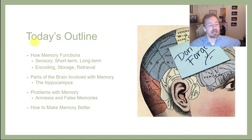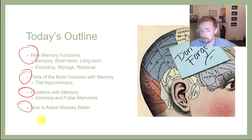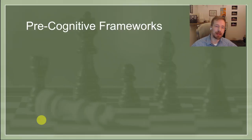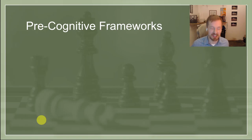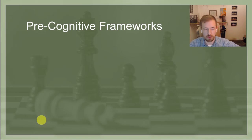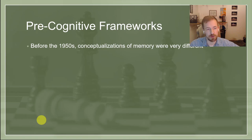So what are we talking about today? We're going to be talking about how memory functions, the different parts of the brain active during memory, what happens when memory goes wrong, and what happens when memory goes right. I tried to make this lecture video image-heavy and reduce the amount of total text. This slide is going to tell you a little bit about history — about how we got to where we are now.